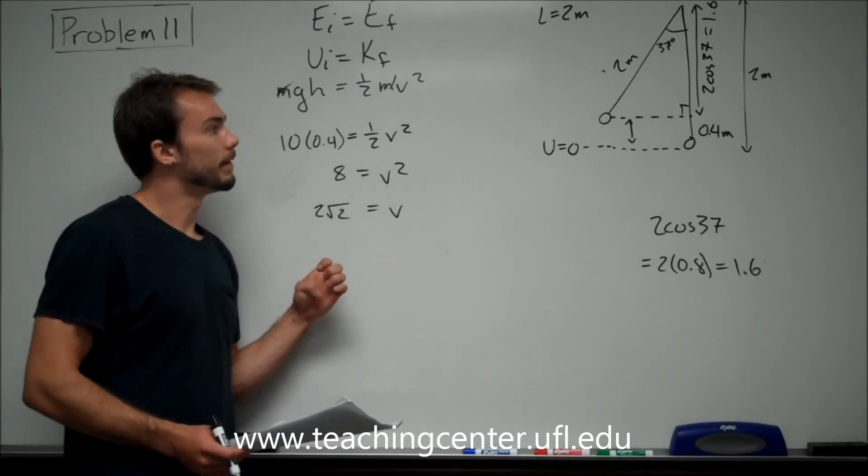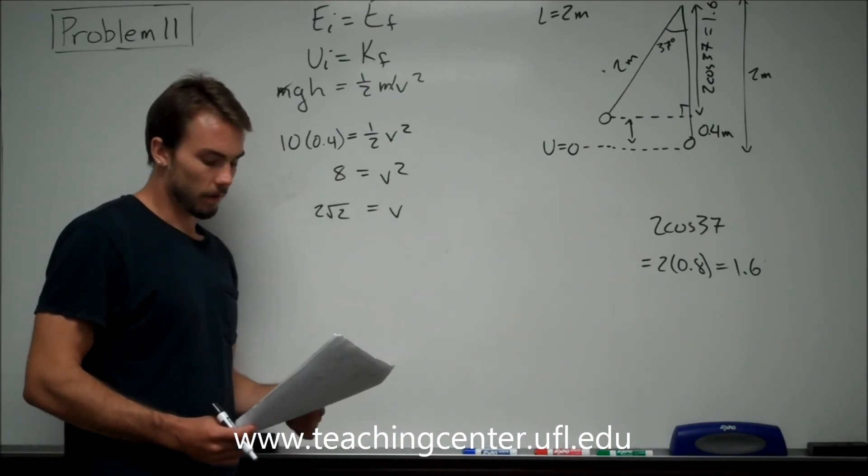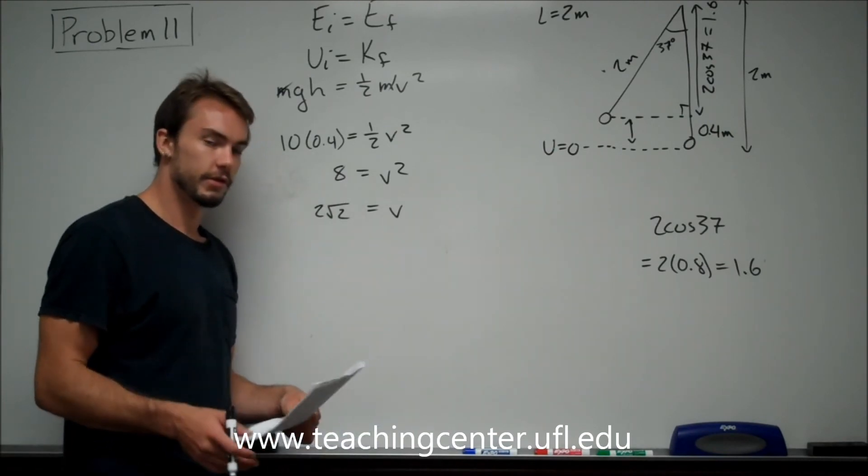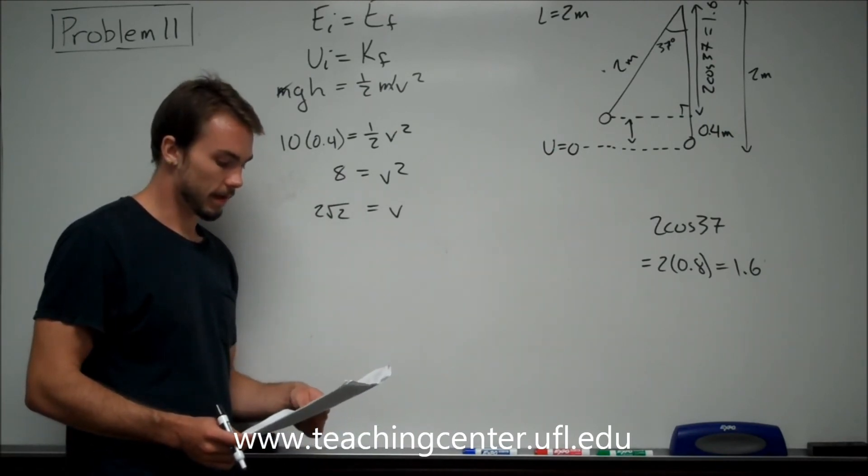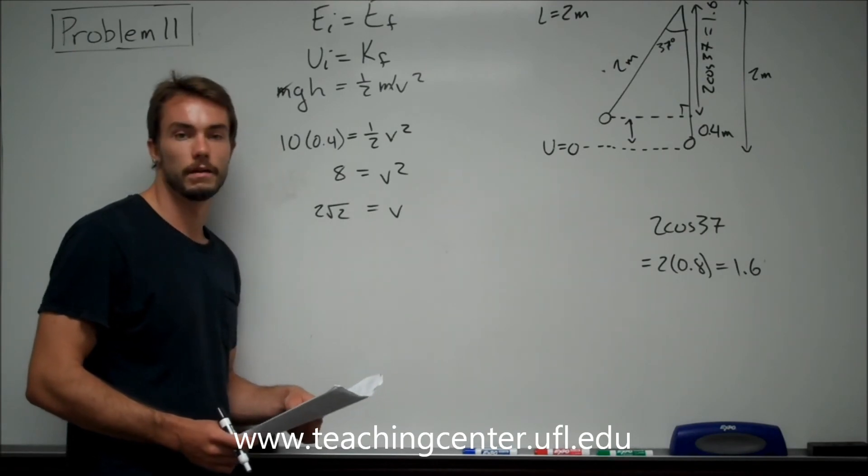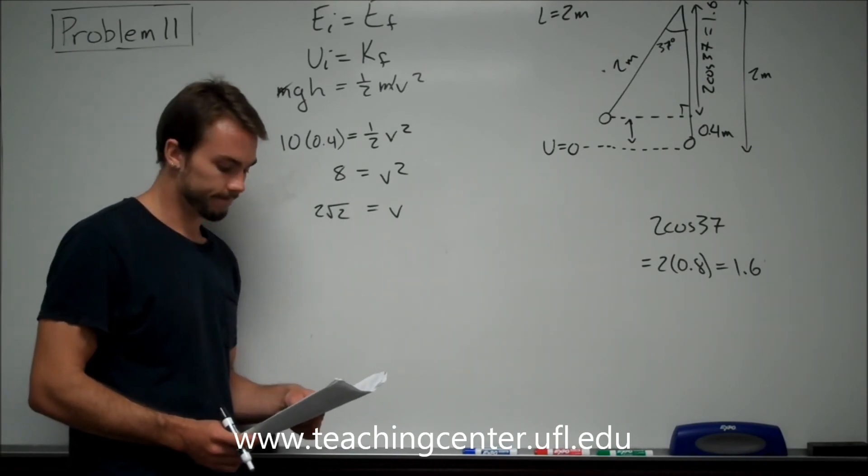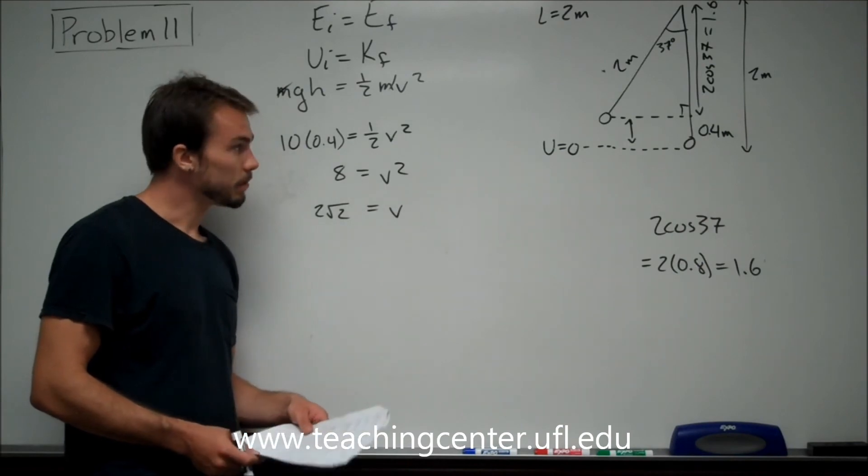So this would be the right answer. This is the velocity at the bottom. This is how you do it, even though this isn't the choice on here. I just think that this test, they made a mistake, and they decided that there was enough good stuff on here to just keep it in the test bank. So that's the end of the problem.